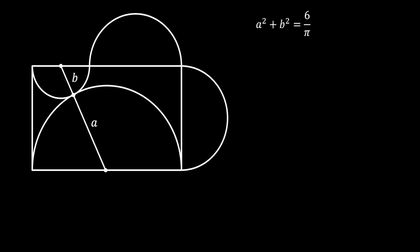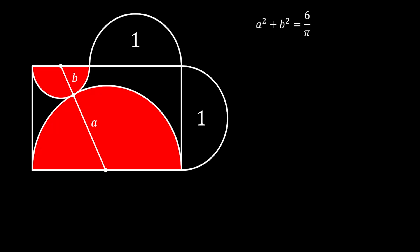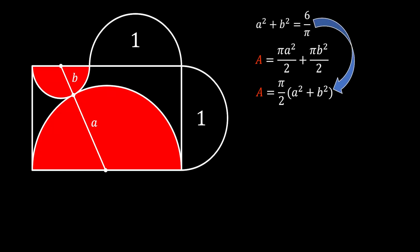Now, remember, we are looking for the combined area of those two inscribed semicircles. We can find this area by adding the area of both semicircles. So this red area equals π A squared over 2 for the big semicircle, and π B squared over 2 for the small semicircle. We can notice that π over 2 is a common factor, so we can isolate it in front of the brackets. Finally, we will substitute A squared plus B squared with 6 over π, and here we can cancel both values of π and simplify 6 and 2, and we will get that the combined area of those two circles is equal to 3 square units.